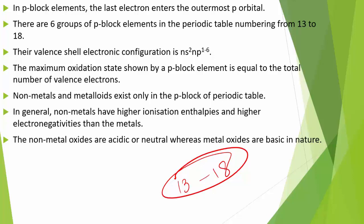The six groups are 13, 14, 15, 16, 17, and 18. Boron, Carbon, Nitrogen, Oxygen, Fluorine, and Helium head these groups. Their valence shell electronic configuration is NS²NP¹⁻⁶, except Helium.